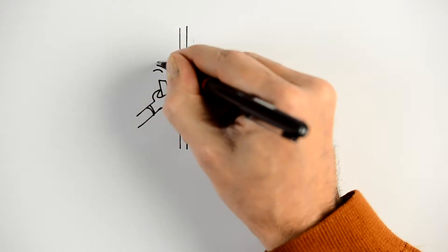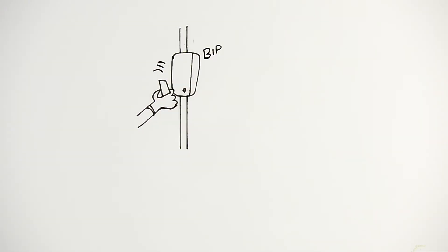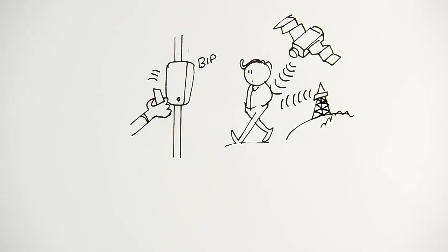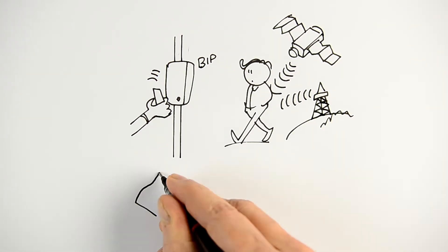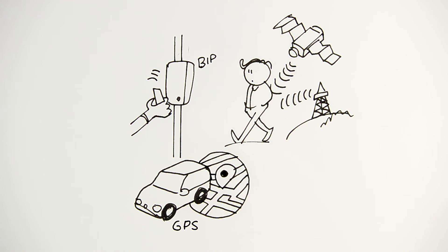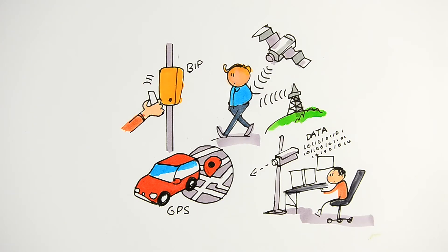You generate useful data whenever you validate your travel card, through your phone's geolocation function and its connections to mobile phone antennas, through your car's navigation system, and through cameras and sensors installed in public spaces and along roads.